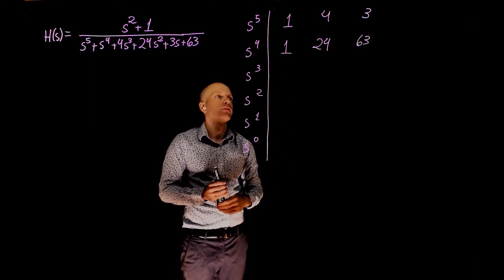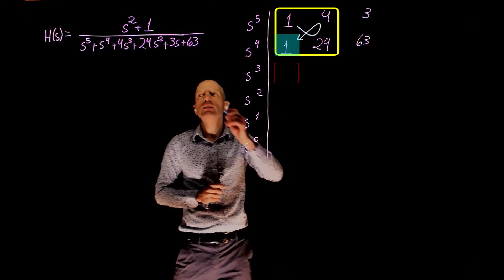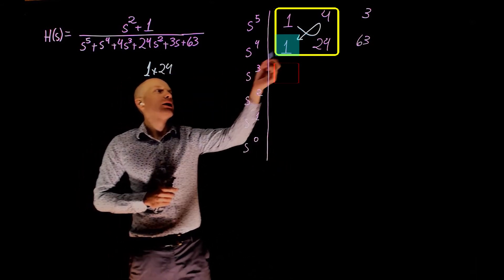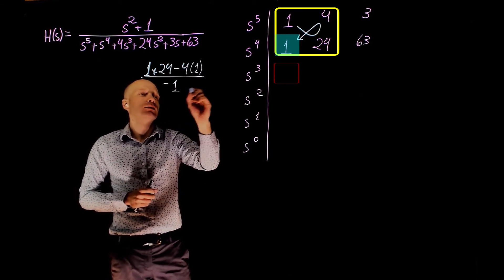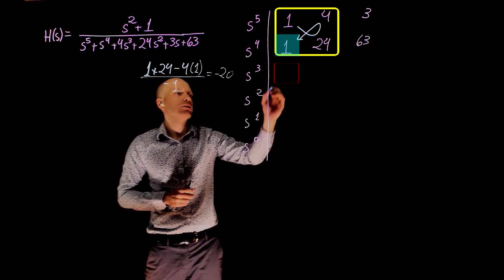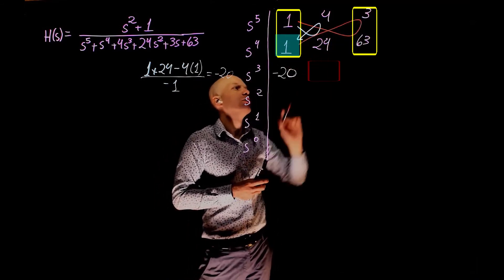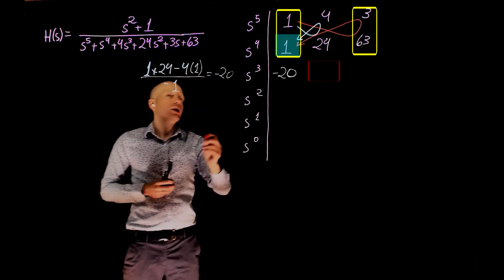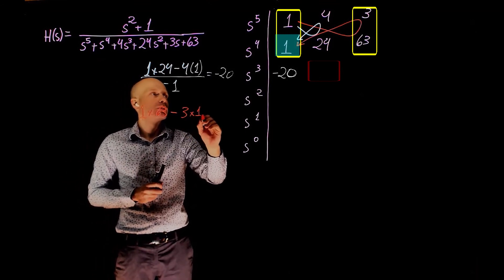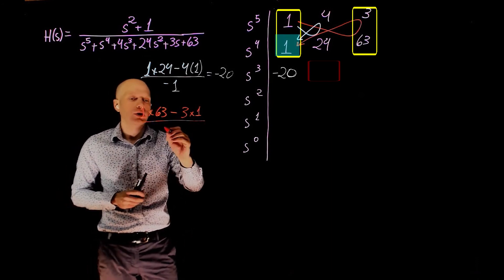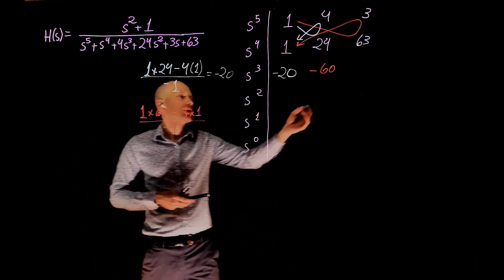We now need to complete the first column. For the first element, we take these four elements: 1 times 24, minus 4 times 1, which is 20, divided by negative 1 — that is negative 20. For the element next to it, we have 1 times 63, minus 3 times 1, divided by negative 1 — which is negative 60. The last element in that row is 0.